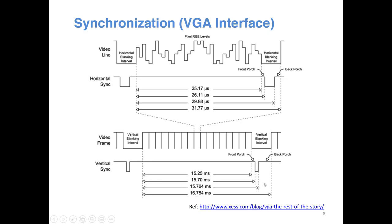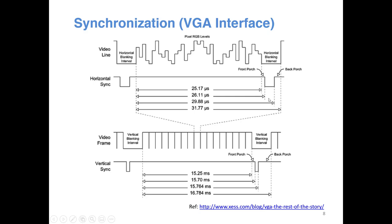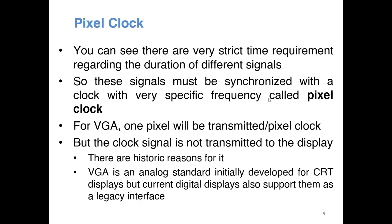There are strict timing requirements for how long each signal should be. To synchronize this timing we need a very precise clock signal called the pixel clock — every rising edge of the pixel clock we send one pixel from the video source. However, in the VGA standard the clock is not sent to the monitor. We send only the video signal and synchronization signals. The reason is historical — VGA was originally used for CRT monitors, a pure analog implementation where the clock was not required.